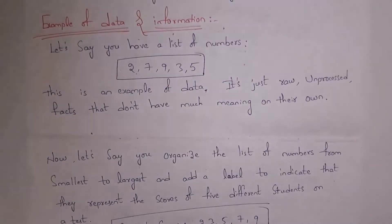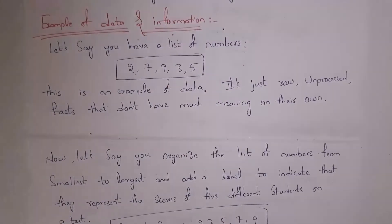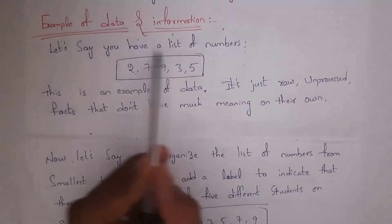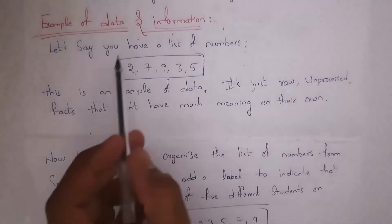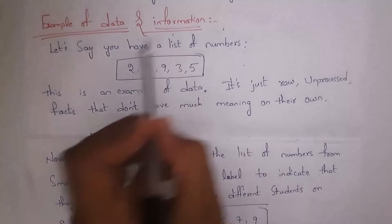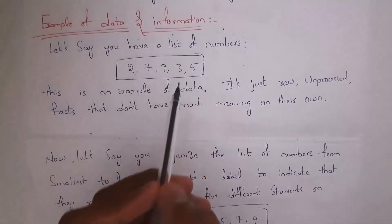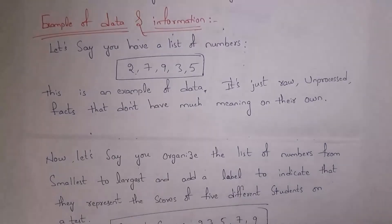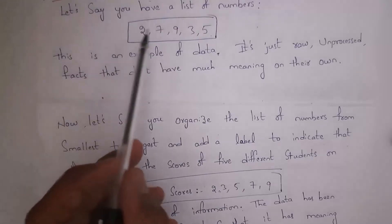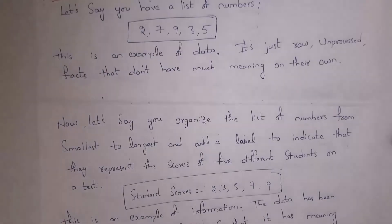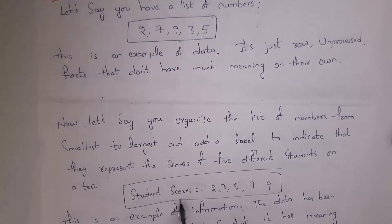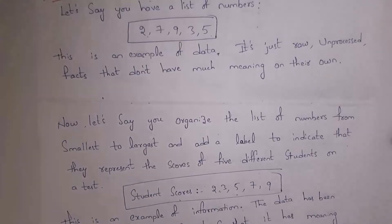For example, consider some numbers: 2, 7, 9, 3, 5. This is an example of data — data is a raw fact that doesn't have much meaning. We don't know whether these numbers are student marks or student roll numbers. But if I write 'student scores: 2, 3, 5, 7, 9', now we call it information, because it has meaning — these numbers belong to student scores.